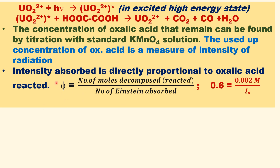The quantum yield is equal to the number of moles decomposed or reacted divided by the number of einsteins absorbed. If you have the quantum yield for this photochemical reaction, the quantum yield must be known — it is about 0.6 for the uranyl-catalyzed decomposition of oxalic acid.